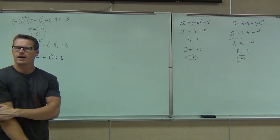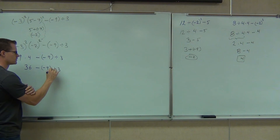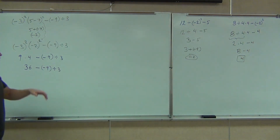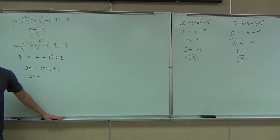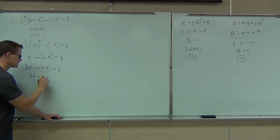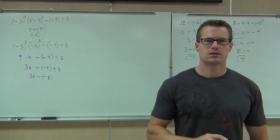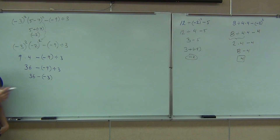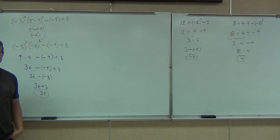Next thing we do — multiply or divide? Multiply. What are we going to have? Thirty-six. How about the next thing? Divide. We're going to ignore the rest of it, just divide negative nine by three. Negative nine divided by three is how much? Negative three. I got two different answers there from the class. Why 39? I know why. I'm wondering if you know why.